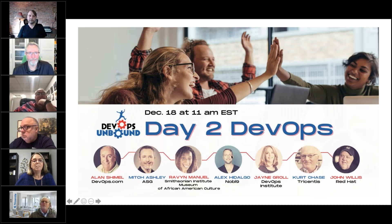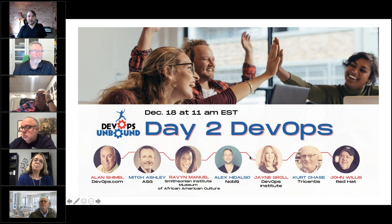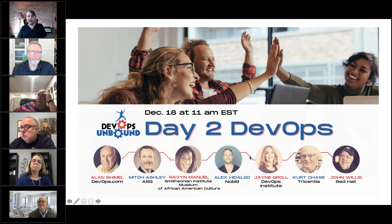Next is Alex Hidalgo from Noble Nine. Alex is the Principal Site Reliability Engineer at Noble Nine. Before that he spent time at Squarespace and Google, where he cut his teeth in site reliability engineering. Before that he spent about a decade in the service industry — retail, restaurants — and he believes some of the skills learned there are the most important of his career. He loves sustainable operations and how people communicate with each other.